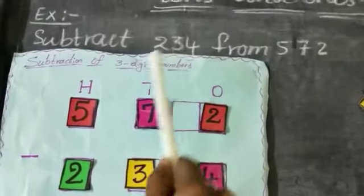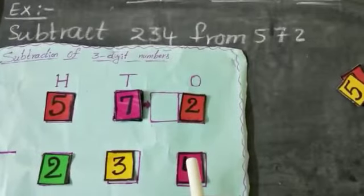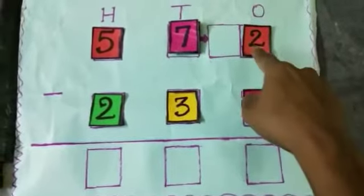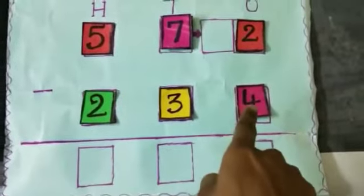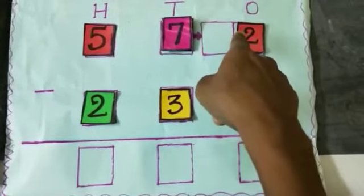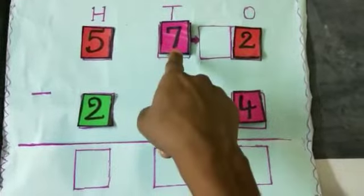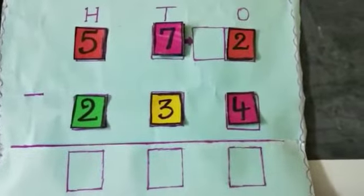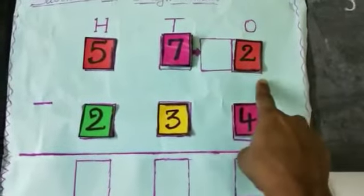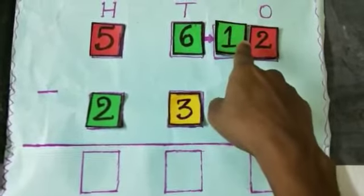234 means 2 in hundreds place, 3 in tens place, 4 in ones place. First, we subtract the ones place values: 2 ones minus 4 ones. 4 ones cannot be subtracted from 2 ones. So, regroup 7 tens and 2 ones — 7 tens giving 1 ten to the ones place, giving 6 tens and 12 ones.